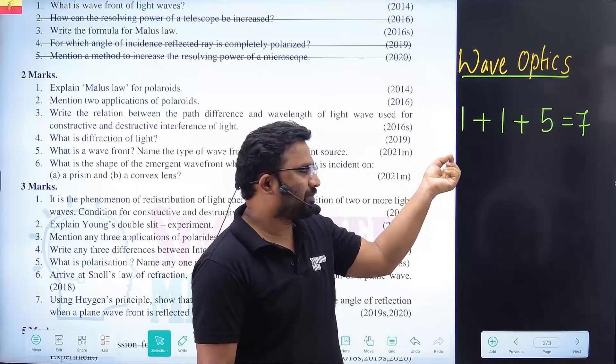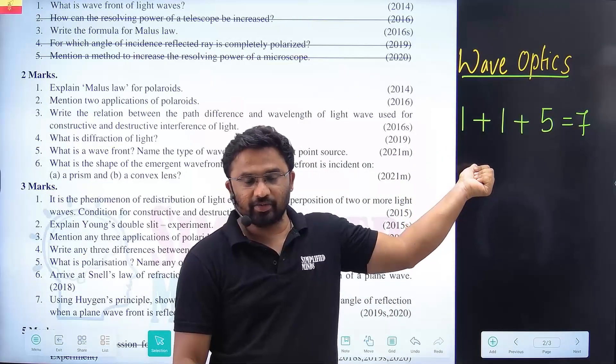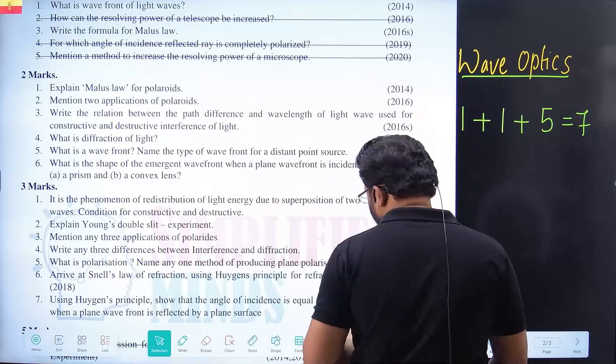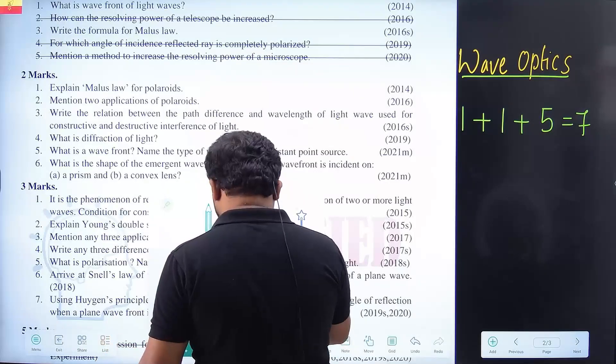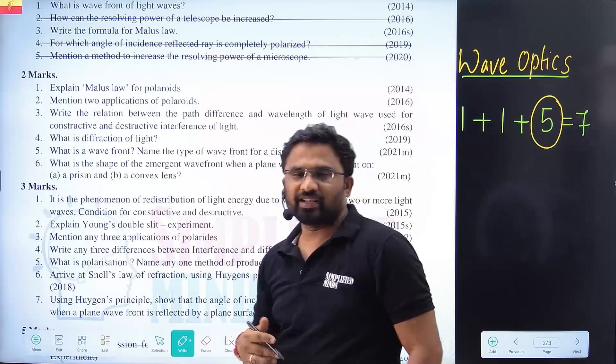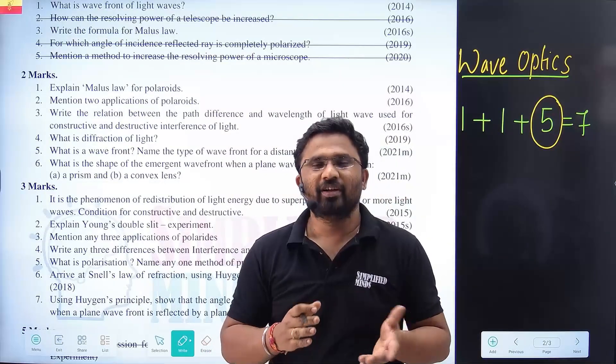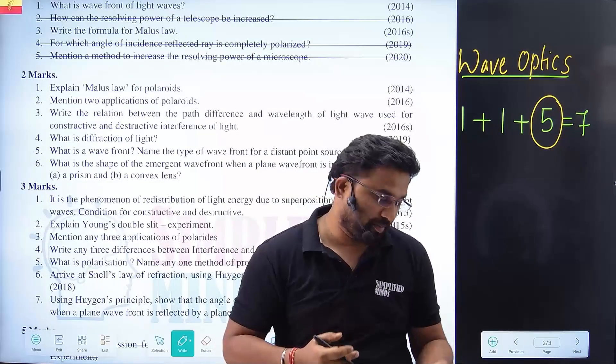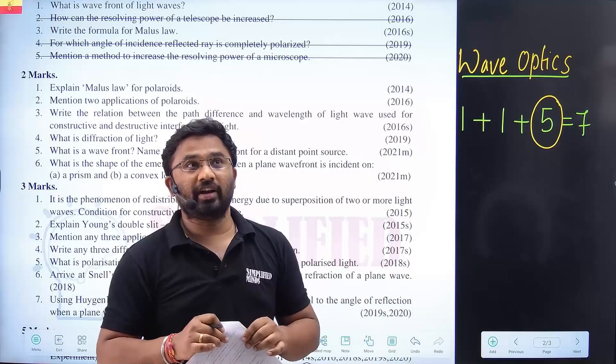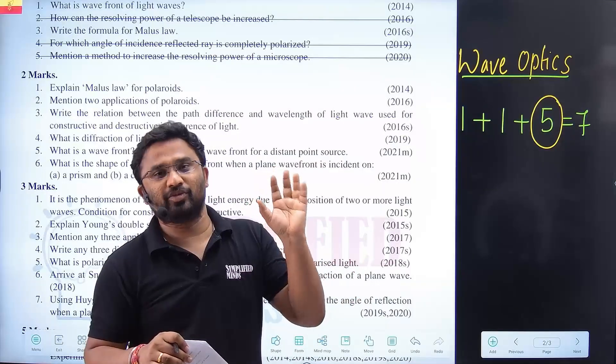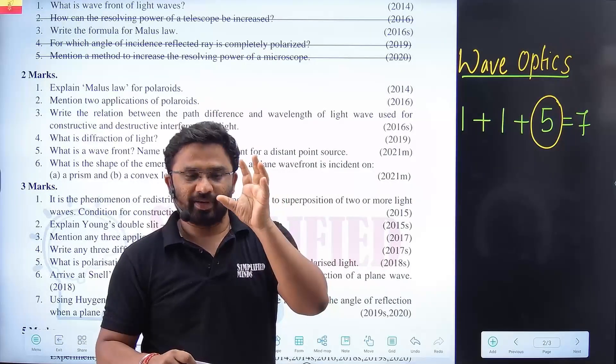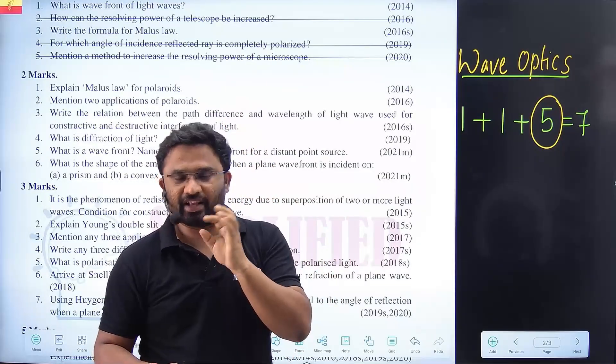The total marks in the board exam is 7 marks. 7 marks will be totally 1 plus 1 plus 5. As per 2024, it will be 5 marks. Usually in every version we will check previous years questions. This is numerical most of the time. I can say 8 out of 10 times numerical. All the videos are in the description box, go and check anything you want.